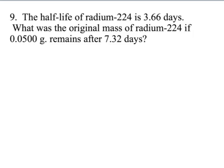This problem is slightly different than the other examples we've done. This one actually tells you the final mass. So after the radium has decayed, there were five hundredths of a gram remaining after a decade. So we're looking for the original amount. Once again, we have to find out how many half-lives have passed. We know the elapsed time is 7.32 days. We know the half-life is 3.66 days. This is indicative of two half-lives.